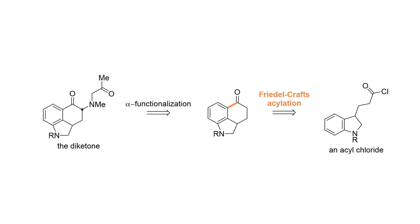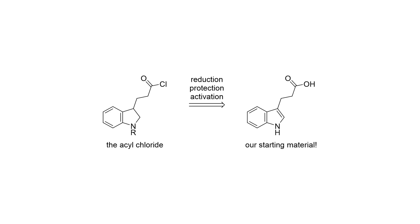This means that we can forge the tricyclic system from this acyl chloride. The acyl chloride can in turn be accessed by reduction, protection, and activation of this indole acid starting material. We've now traced back the Lilly-Woodward synthesis to its starting materials. If you feel overwhelmed, don't worry — we've only considered the key disconnections of the retrosynthesis so far and ignored some steps. Now we will fill in the blanks when we look at the forward synthesis.